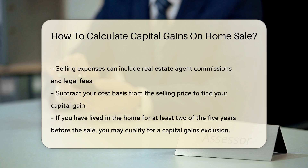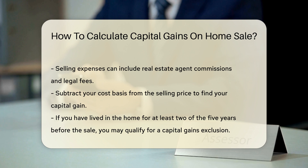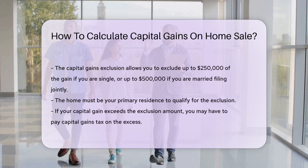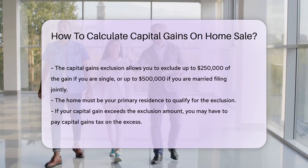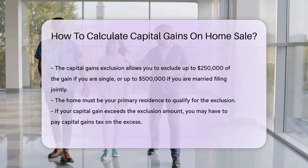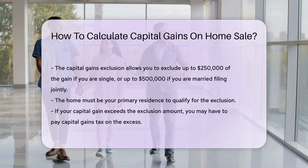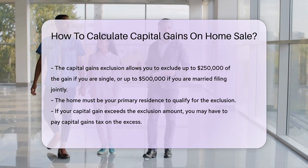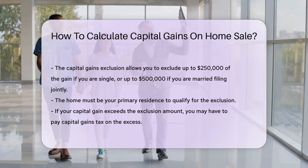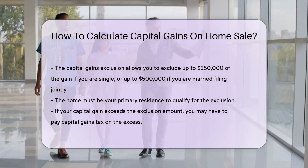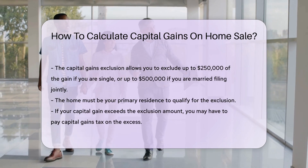Subtract your cost basis from the selling price to find your capital gain. If you have lived in the home for at least two of the five years before the sale, you may qualify for a capital gains exclusion. This exclusion allows you to exclude up to $250,000 of the gain if you are single, or up to $500,000 if you are married filing jointly.